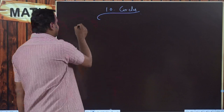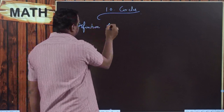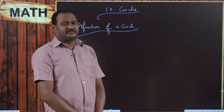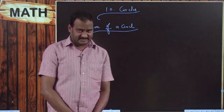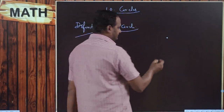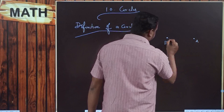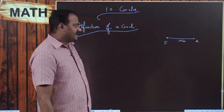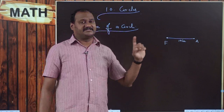Coming to the definition of a circle: if we observe the definition of circle, I think nowhere we get the exact definition. But if you think logically, the definition of a circle is — let us have a point, let this be a fixed point, and I am taking one more point, let this point be A, which is at a distance of 10 centimeters from this fixed point F. Like that, how many number of points can be plotted which are at 10 centimeters distance from the fixed point F?